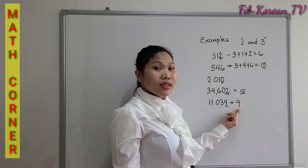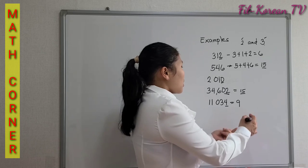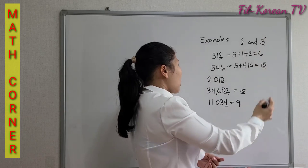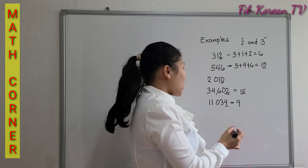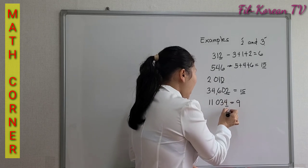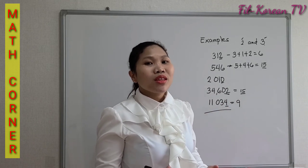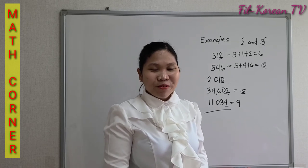Since the answer is 9, it is divisible by 3. That means 11,034 is divisible by 6.